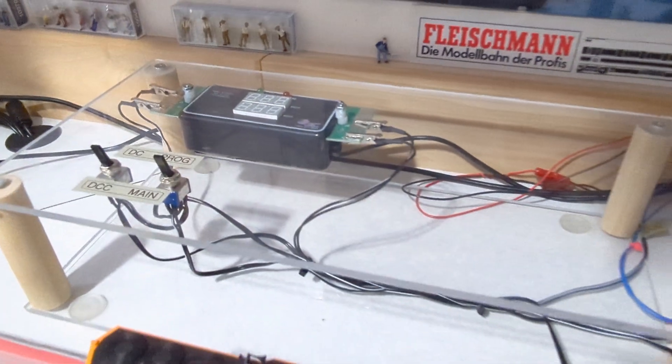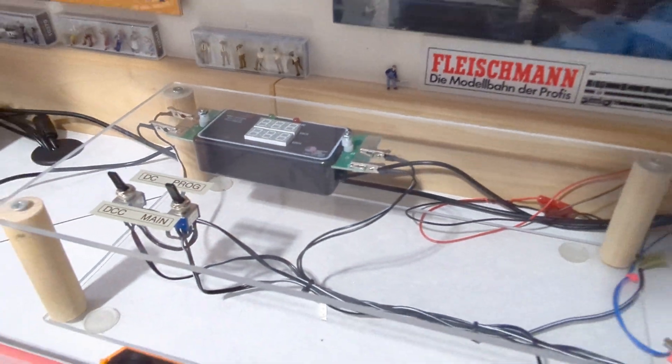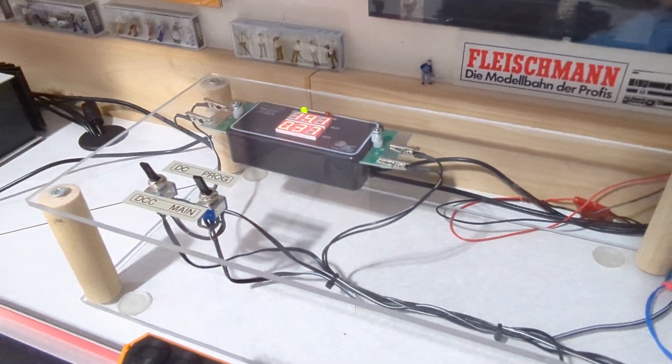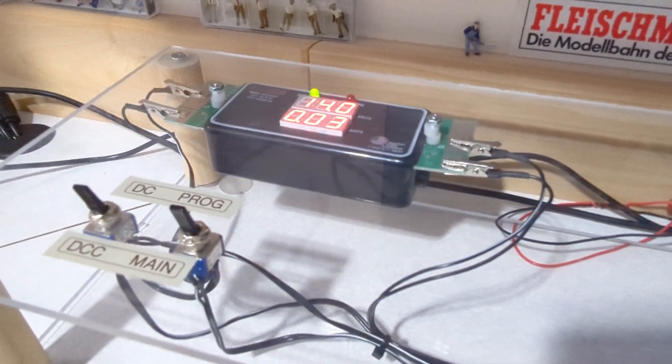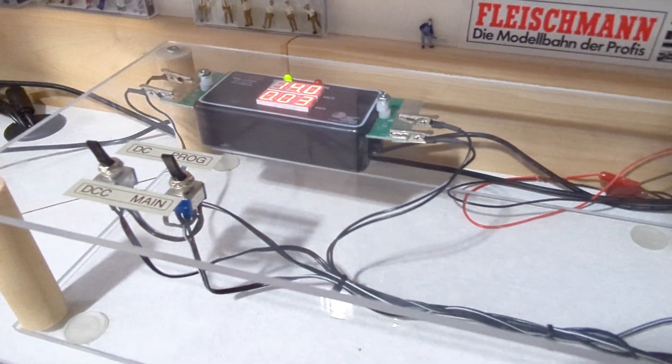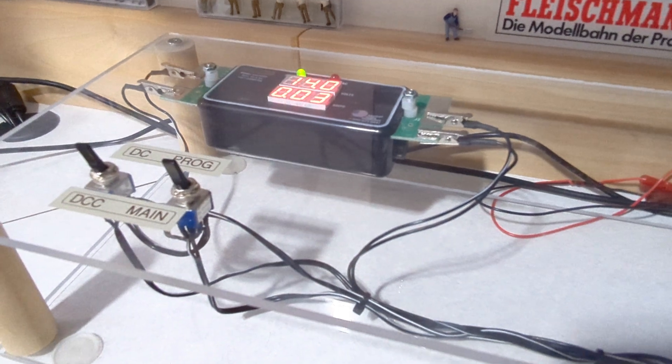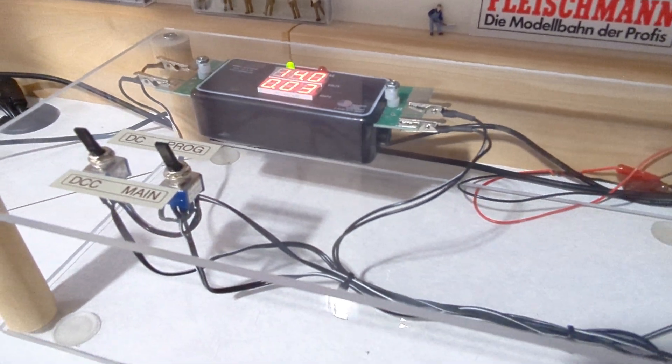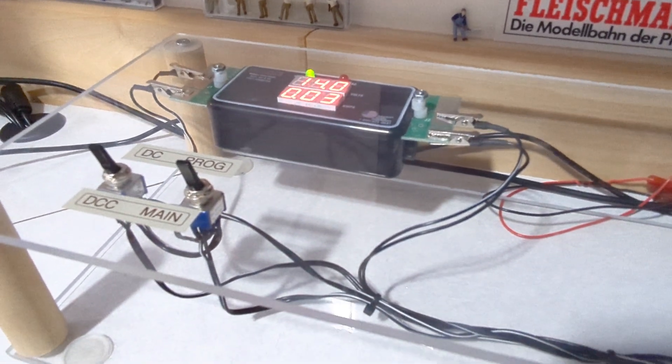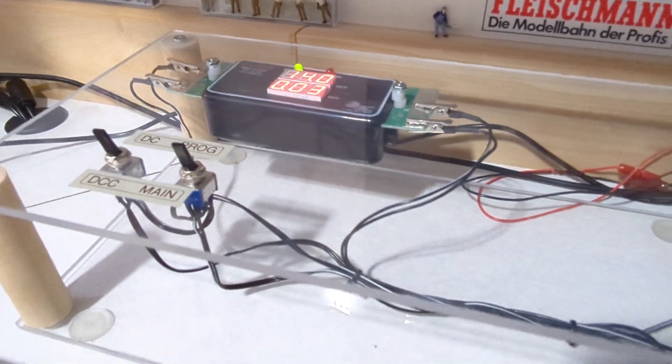Some items are nice to have, like this ramp meter. Turning it on. But not necessary. It gives me voltage of the system output and amperage. Sometimes it surprises you with the amperage when you start running a locomotive.